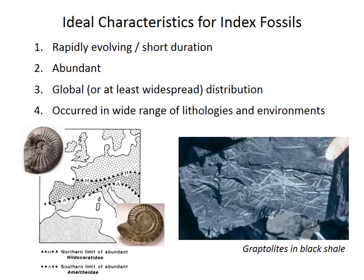Truly global distributions don't occur. The lower left illustration shows the range of a couple of early Jurassic ammonite families. The Hildoceratidae typically occur at lower latitudes, whereas the Amaltheids occur at higher latitudes. As a result, there are two parallel zonations in Europe — one in northern Europe and one in the Mediterranean region — that must be correlated to each other. Fourth and finally, the species should be found in a wide range of lithologies representing a variety of environments. For example, graptolites are primarily known from shale-dominated and often deeper water successions, and are rare in shallow water sandstones.